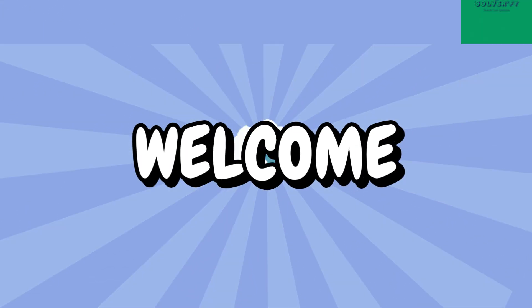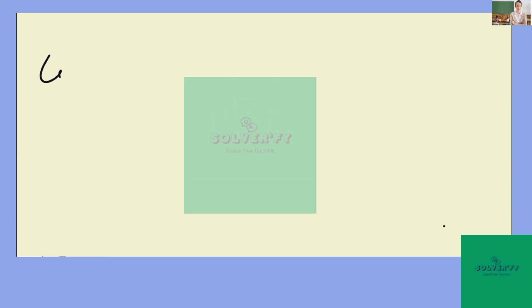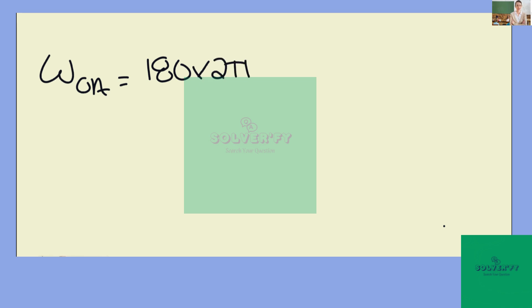Welcome to Solver Phi. First we can calculate the angular velocity at our crank OA. This is going to be 180 times 2 pi times 1 over 60, which will give us 18 pi radians per second.